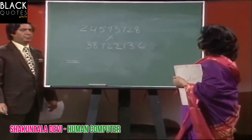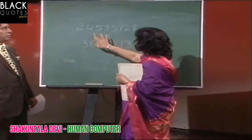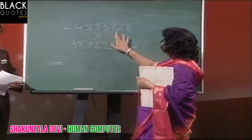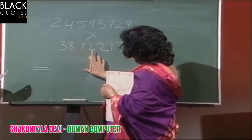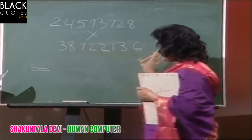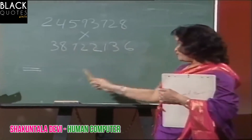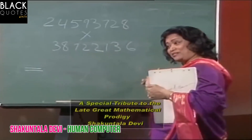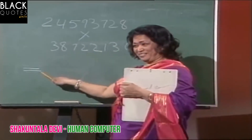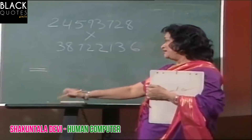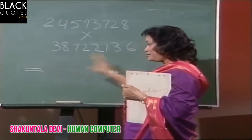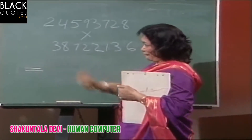Okay, now the question is 24593728 multiplied by 38722136. Now tell me — do you want me to give you the answer from this side to this side, or this side to this side? Let's change — do you want the answer from this side to this side? I decided to say no, we'll keep the unconventional method for later on.